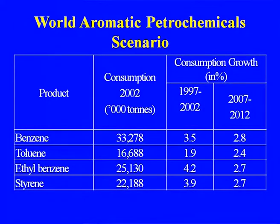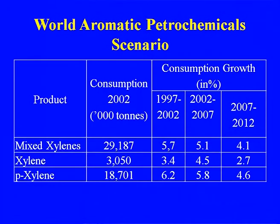The world aromatic petrochemical scenario covers consumption figures of benzene, toluene, and xylene from 1992 to 2002 and 2007 to 2012. Consumption growth rates: benzene 3.5 to 2.8 percent, toluene 1.9 to 2.4 percent, ethyl benzene 4.2 to 2.7 percent, styrene 3.9 to 2.7 percent. Mixed xylene and para xylene growth figures span from 1997–2002 through 2007–2012.